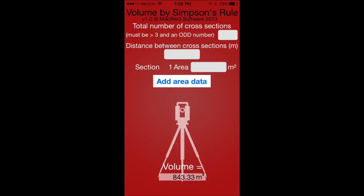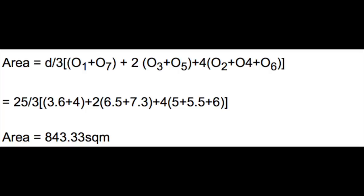Once we add that last area, we get our volume of 843.33 square meters. When we compare the values of Simpson's rule using hand calculations, the result is spot-on. Huge time saver.